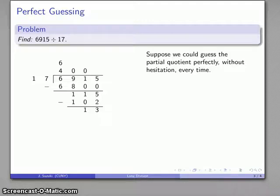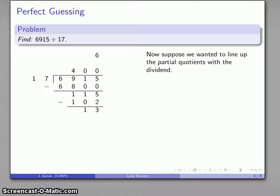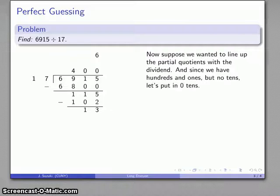Alright, well let's suppose we want to play around with this a little bit. Suppose I wanted to line up these partial quotients with the dividend. Why would I want to do that? I don't know, but suppose I want to just because I think it looks pretty. So this 400 should actually go a little bit further over, and the six actually needs to go in the ones place. Now it's worth noting I have hundreds, I have ones, but I have no tens. And so just because I feel like it, maybe I'll indicate that I have zero tens by putting in the tens there.